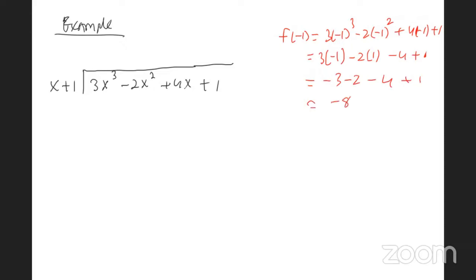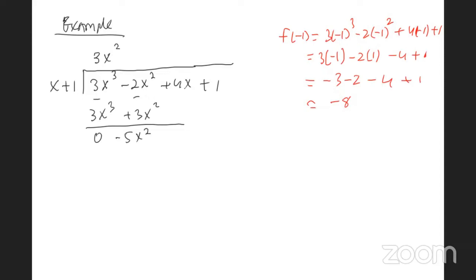The remainder is minus 8. Now going through the long division: x into 3x³ is 3x². Then 3x² times x is 3x³, and 3x² times 1 is 3x². Subtract: 3x³ minus 3x³ is 0, and -2 minus 3 gives minus 5x². Bring down the 4x and the 1.